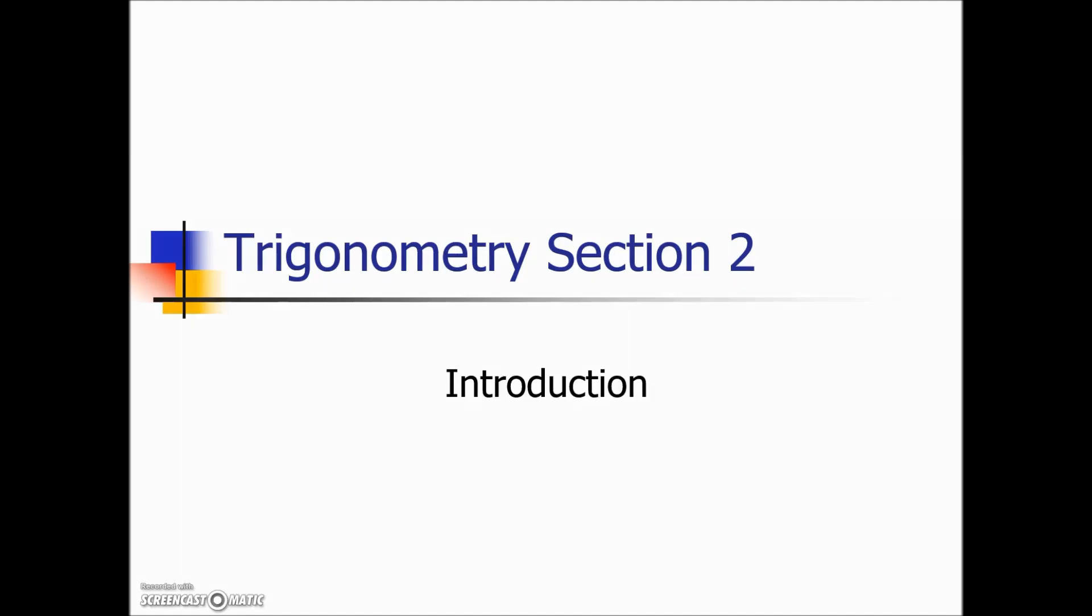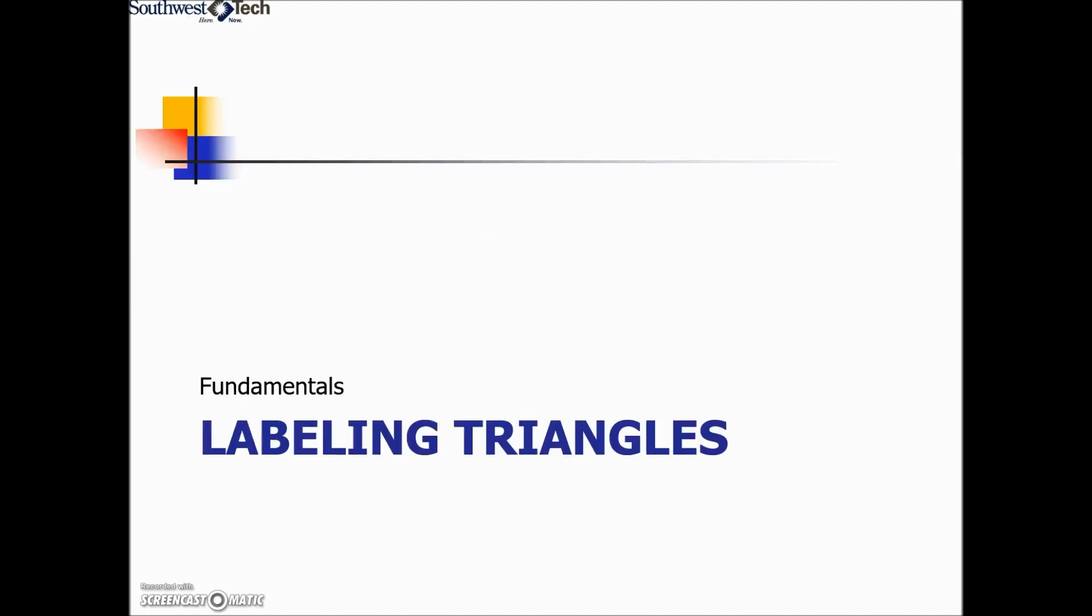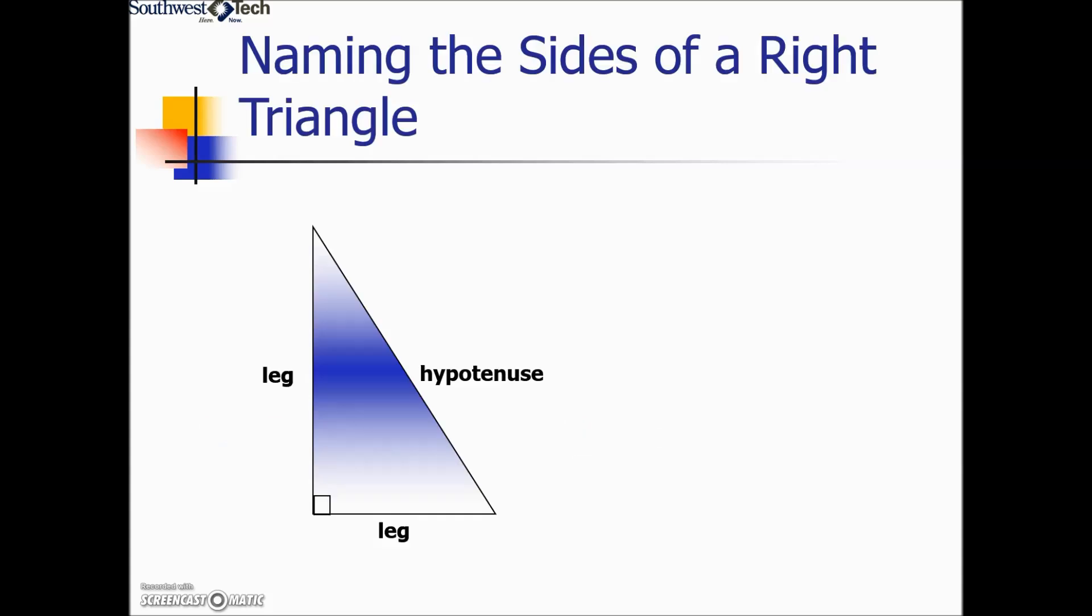Trigonometry Unit Section 2 Introduction. We're going to take a look at labeling the triangles. Trigonometry depends upon being able to precisely specify a particular side or sides of a right triangle. This means that each side must have a unique name.